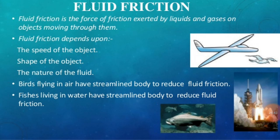The streamlined shape of an aeroplane is built by scientists and engineers, whereas the streamlined shape of a bird has evolved naturally. Rockets are also built with streamlined shapes so that they encounter minimum air resistance or drag when they fly off at extremely high speed.